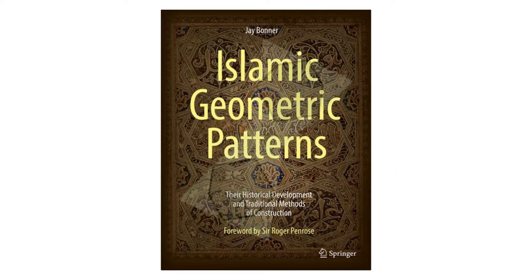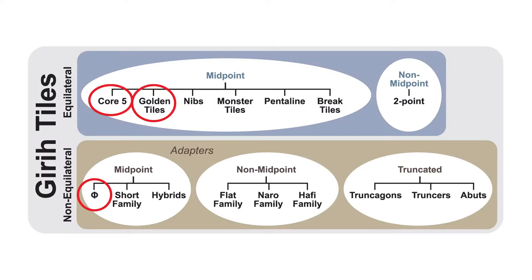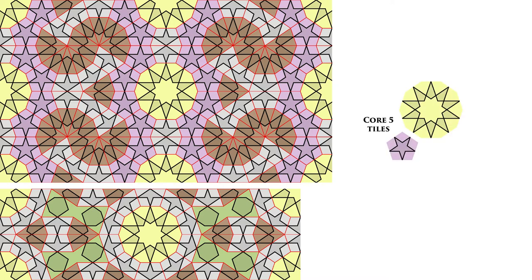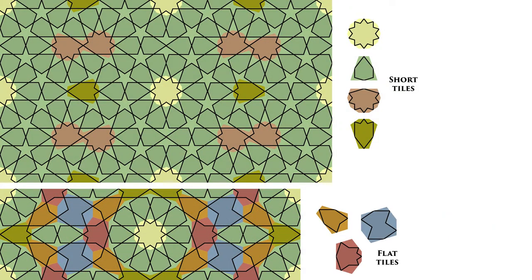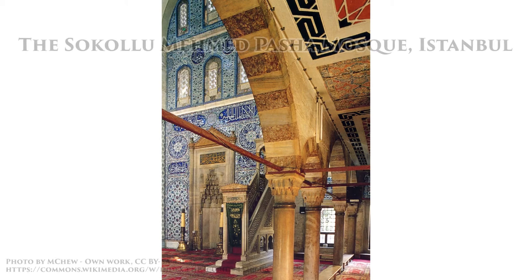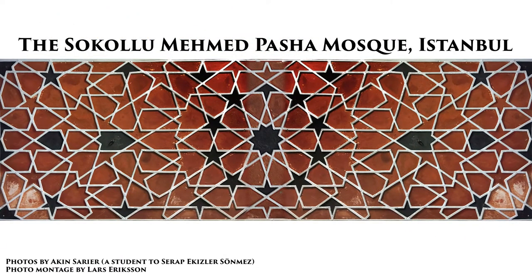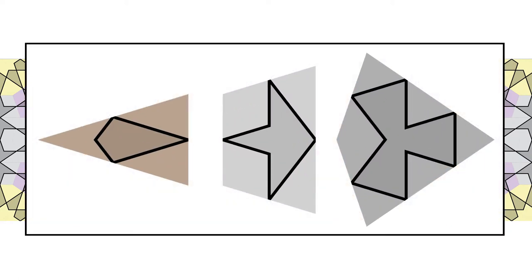Bonner acknowledged this in his book from 2017. He specifies three all-Phi-sided tiles from the Core 5 Set. I call these Phi-sized tiles the golden tiles. As equilateral midpoint tiles, they fit into the chart next to the Core 5 category. The two Burgoyne patterns are examples of historical Islamic geometric patterns that cannot be tiled with the Core 5 tiles — they require tiles from a non-equilateral category. The Phi category is one of two categories that can tile them. The non-equilateral tiles make up a large part of the additional tiles, and as they are crucial for recreating many Islamic geometric patterns, I call these adapted tiles, or adapters for short, as they can adapt from one edge rule angle to another.